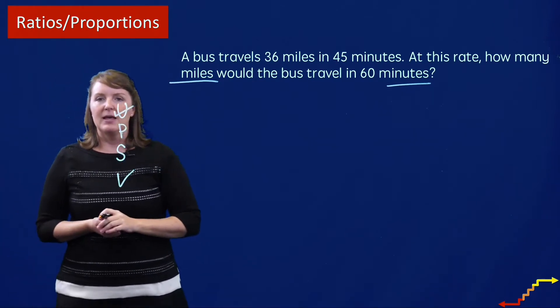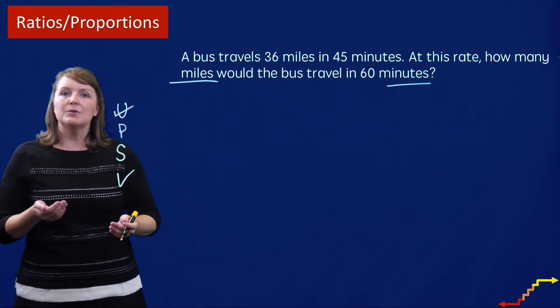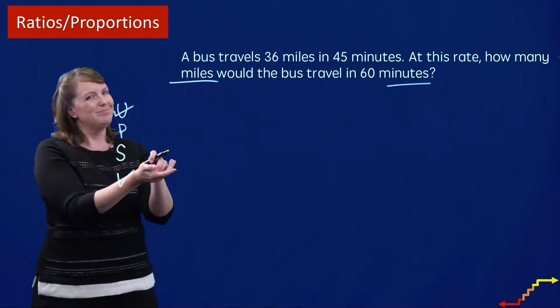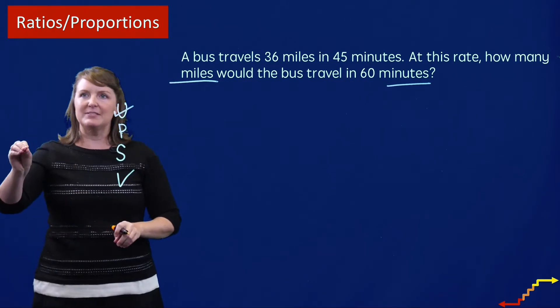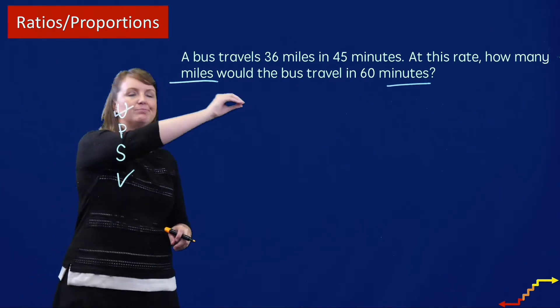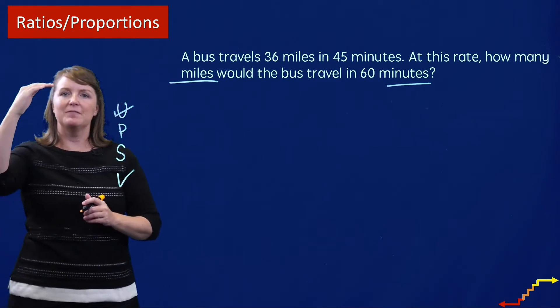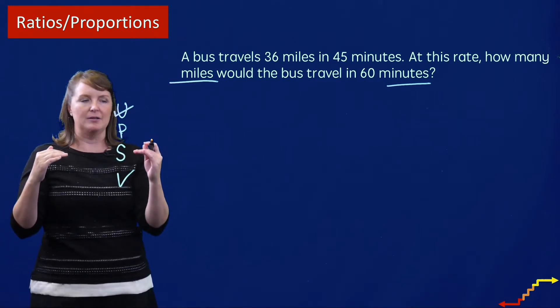Now let's make a plan. I could ask myself, is this an equal groups problem where I have groups with an equal number in each group? No. Is this a comparison problem where I have a set compared a number of times? No. Is this a ratios and proportions problem where if this is to that, then this is to that? Let's see.